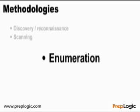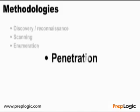Then we go into enumeration. Enumeration is getting a little more granular in our attack — we're looking for services, users, and shares out on that network, different resources that can become points of entry. Penetration is actually using that information, the services and operating system weaknesses, to gain control. This is where the exploits really come into play.